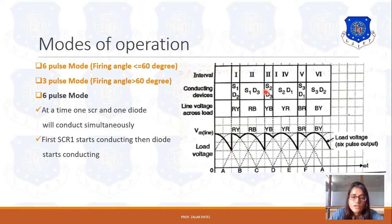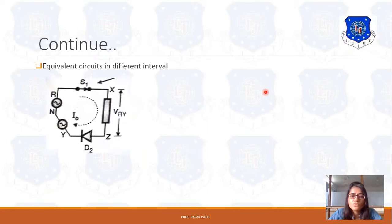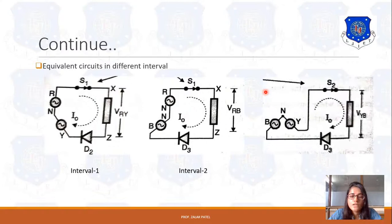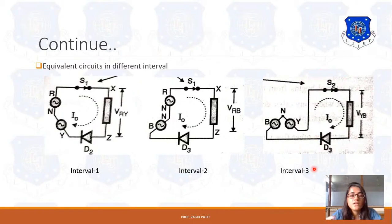In the next session, we will discuss the three-pulse mode and see some examples related to six-pulse mode. You can also draw the equivalent circuit diagrams for the other three intervals — intervals 4, 5, and 6 — connecting S3 with diode 1 and diode 2. If you have any query, you can WhatsApp me on my number. Thank you for watching.